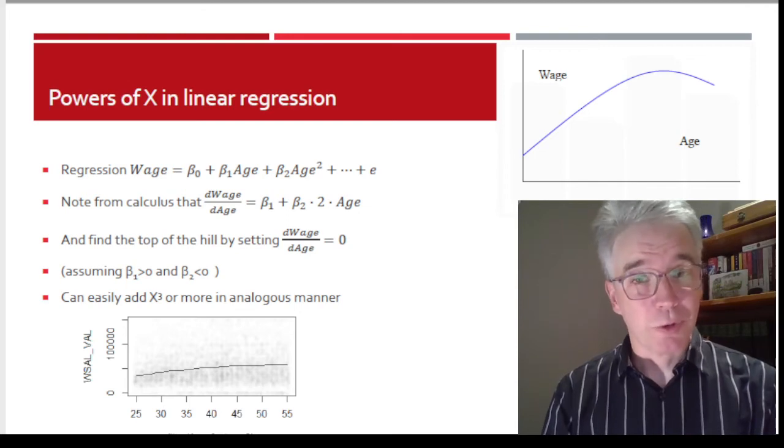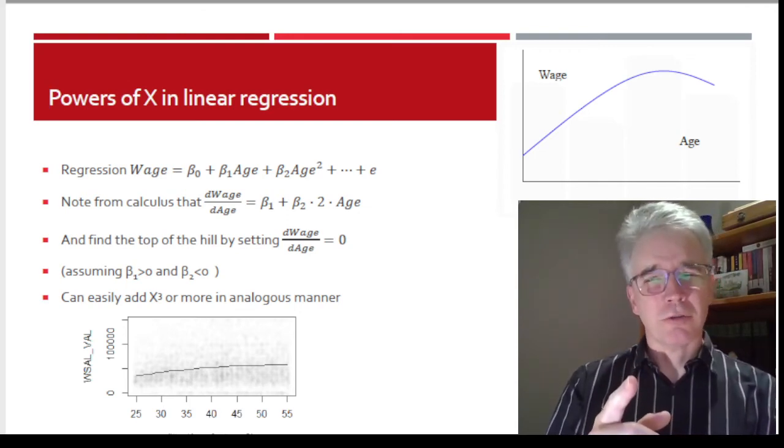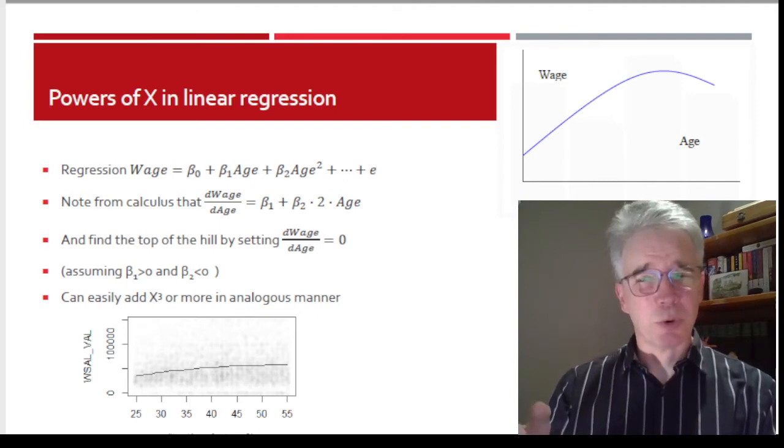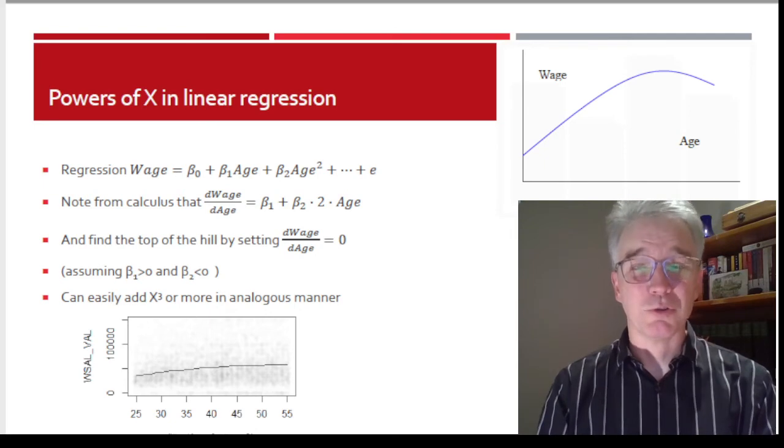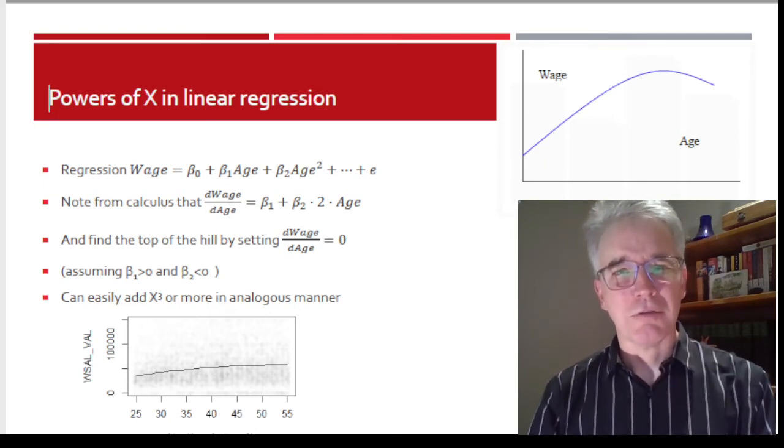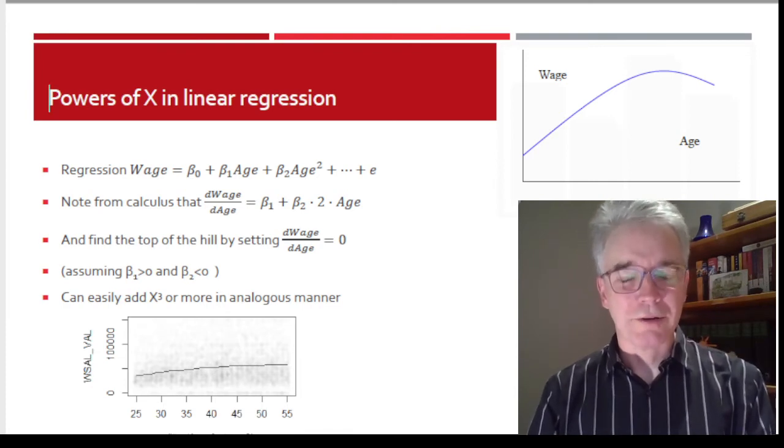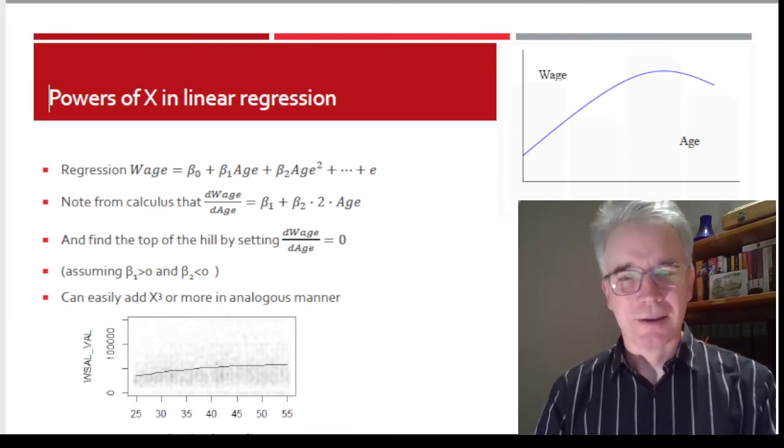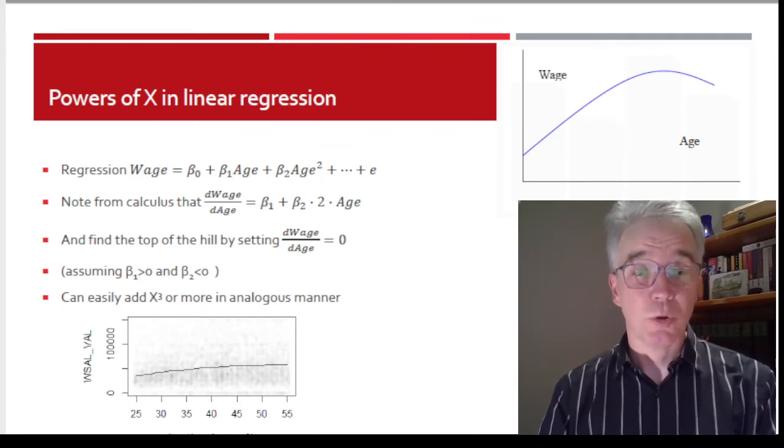You generally do not want to go through and say the one in H² is statistically different from zero, the one in H⁴ is different from zero, but cubed, that's not different from zero, just drop that from the regression. Because it's kind of weird to think you'd have such precise knowledge about one of those polynomial terms and not any of the others.